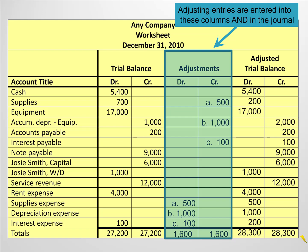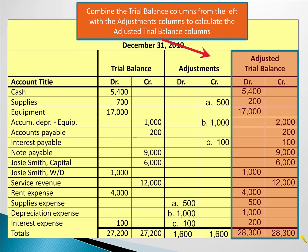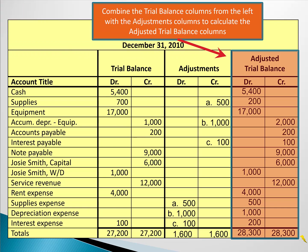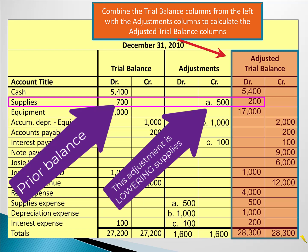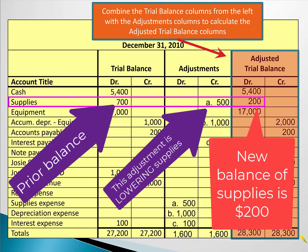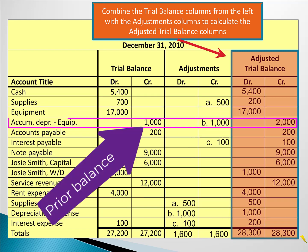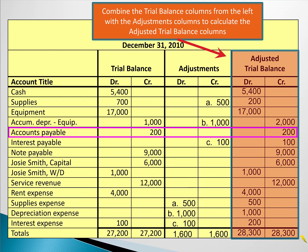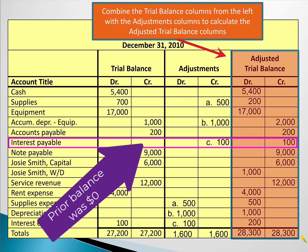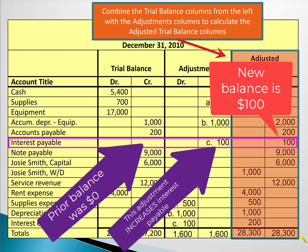Once the adjustments are entered here they can then be entered into the journal. When the adjustment columns are done, we update the balances of each account in the adjusted trial balance columns. Cash was 5,400 with no adjustment, so it stays 5,400. Supplies had a 700 debit and a 500 credit adjustment, so 700 minus 500 gives us 200. Equipment was not adjusted. Accumulated depreciation was 1,000 and increased by another 1,000, giving a new balance of 2,000. Accounts payable was not adjusted.